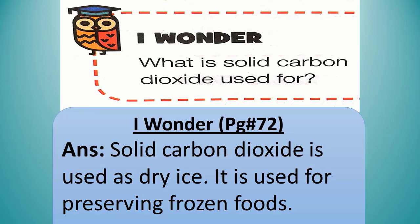I wonder, page number 72. What is solid carbon dioxide used for? Solid carbon dioxide is used as dry ice. It is used for preserving frozen foods. Dear students, you have to write down this answer on your science textbook.